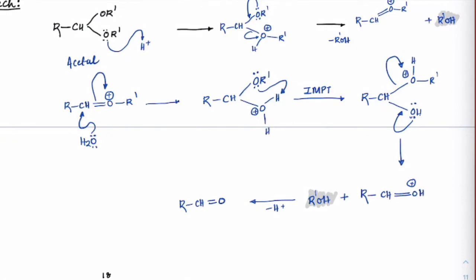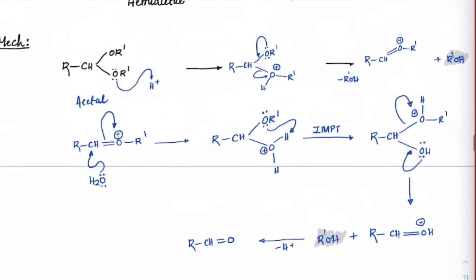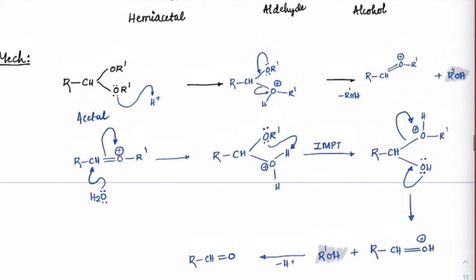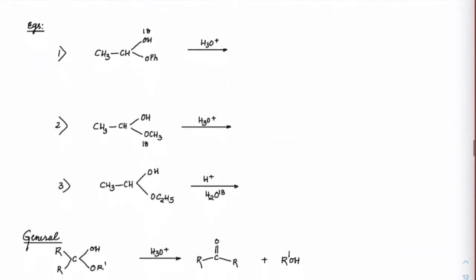Check this carefully: the oxygen present with water is the one carried throughout the mechanism. So if it were an isotopic oxygen, the aldehyde would have that isotopic form. If the two original OR oxygens were isotopic, both would appear only in the alcohol forms.